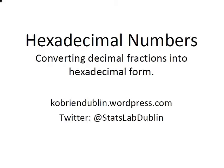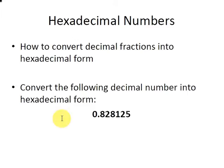In this presentation we're going to look at hexadecimal numbers and how to convert decimal fractions into hexadecimal form. What we're going to do is convert the following decimal number into hexadecimal form: 0.828125.